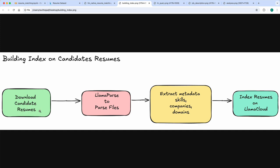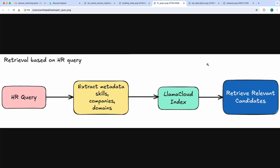Let's dig deeper into the different stages. The first is building an index on candidate resumes: download candidate resumes from the Kaggle dataset — 30 resumes — and use LlamaParse to parse the files. Then extract metadata like what skills these candidates possess, which companies or countries they've worked at or graduated from, and what domains — IT, sales, or finance — they've worked in.